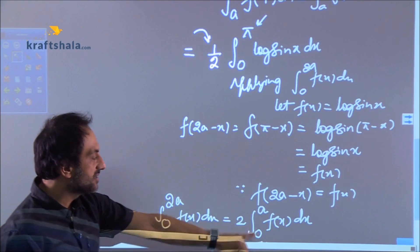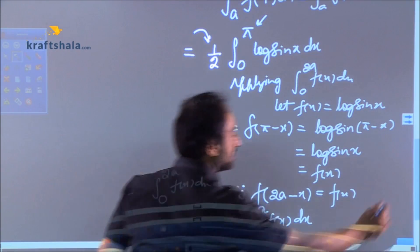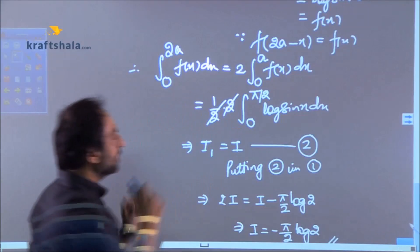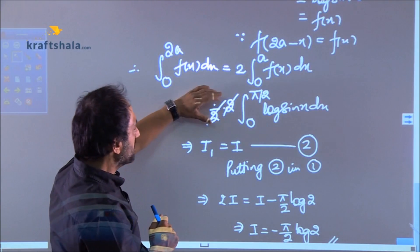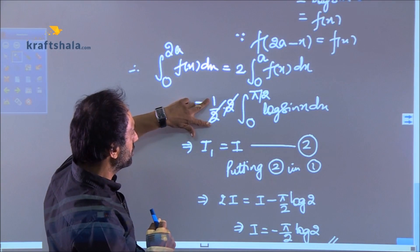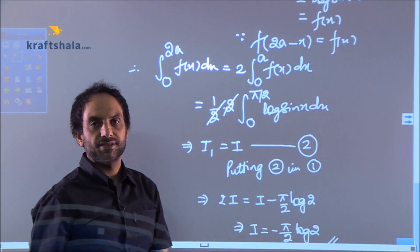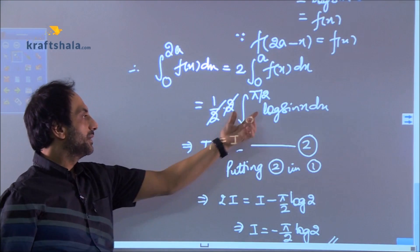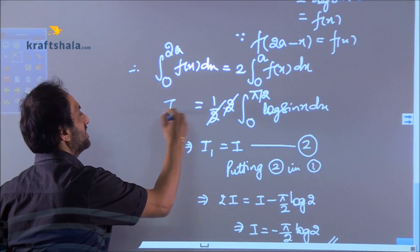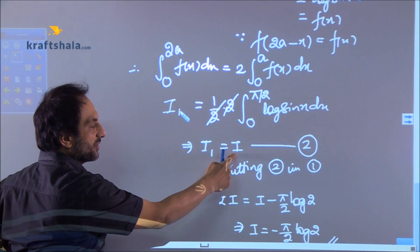You know the property that whenever this thing happens it becomes twice 0 to a f(x) dx. Now after applying this property your expression will turn to 1/2 × 2 × 0 to π/2 log sin x dx and here you win because this I₁ is now I the original question.